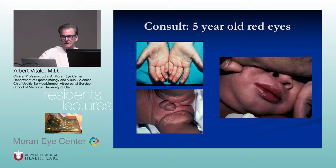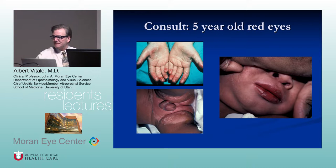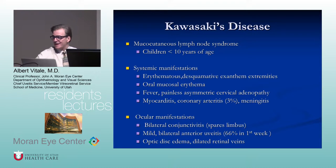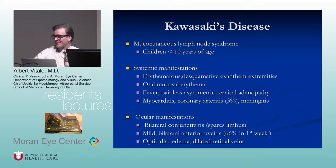If you're consulted at Primary Children's Hospital for a five-year-old girl with red eyes who also has a desquamated rash, desquamation in the groin area, and cherry lips — think Steven-Johnson syndrome or Kawasaki disease. Kawasaki is what comes to mind first with the red lips and finger findings. Kawasaki is a mucocutaneous lymph node syndrome usually in kids under ten, with systemic manifestations: oral and mucosal erythema, fever, and painless asymmetric cervical adenopathy.